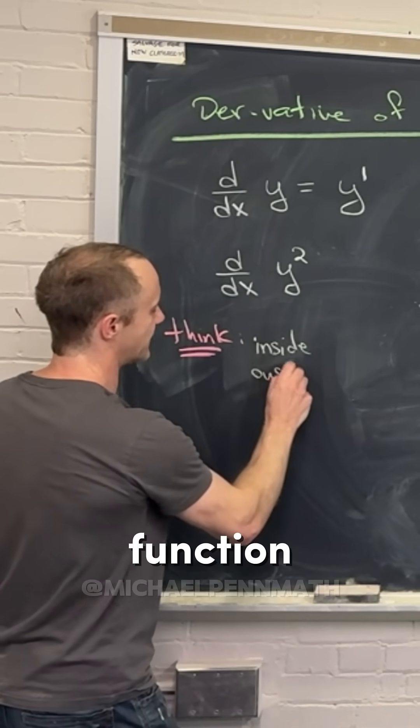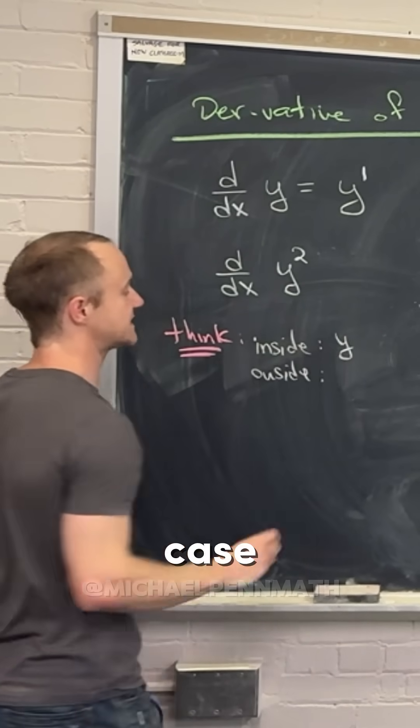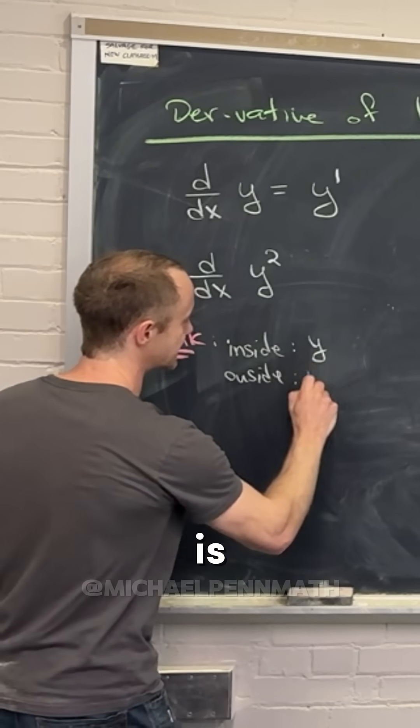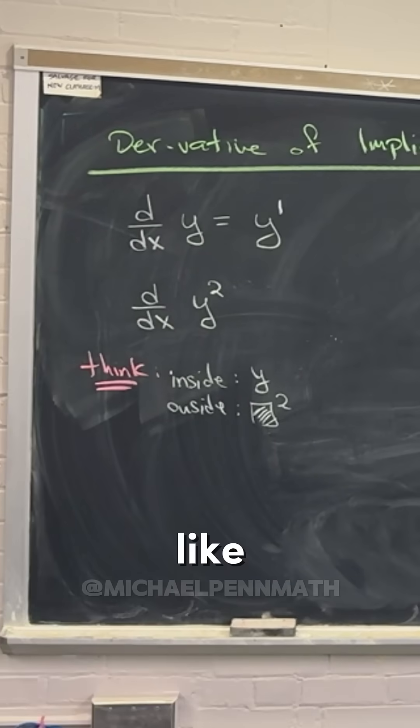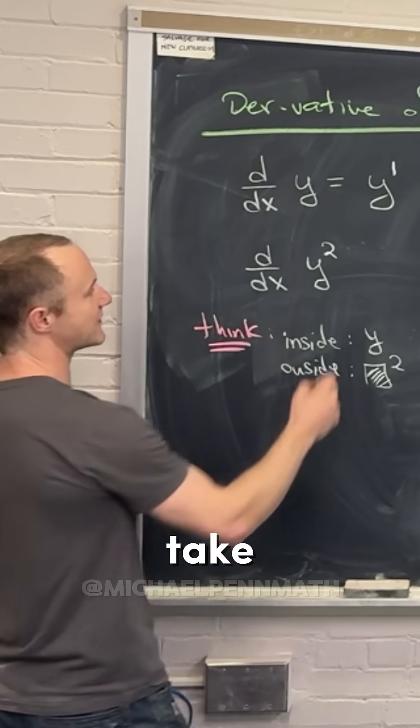And then you have an outside function. Your inside function in this case is just the function y, and then your outside function here is the function that takes something and squares it. Look what we've got: we've got the inside function composed inside the outside function, but now we know how to take the derivative.